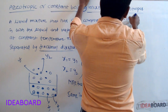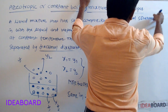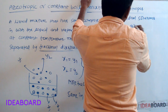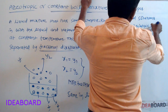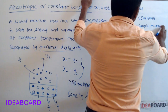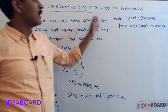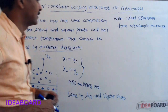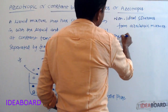Non-ideal solutions form azeotropic mixtures. These azeotropic mixtures are of two types: azeotropic mixture with a minimum boiling point, and azeotropic mixture with a maximum boiling point.